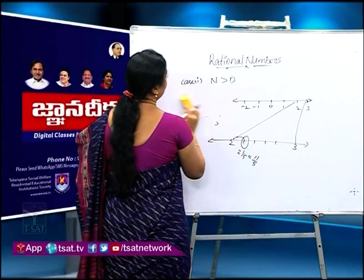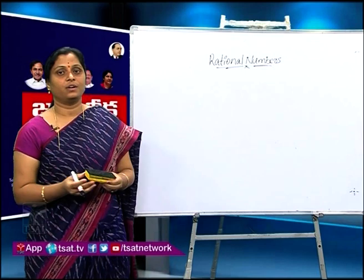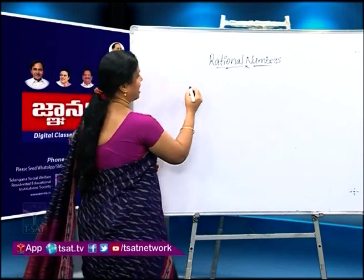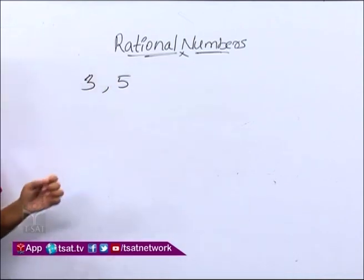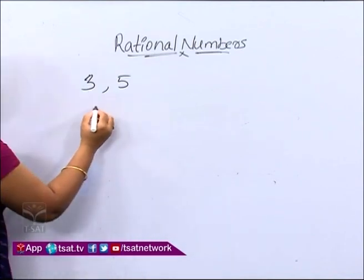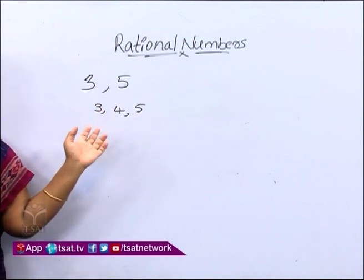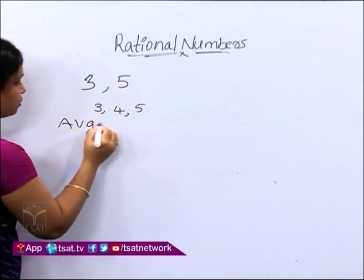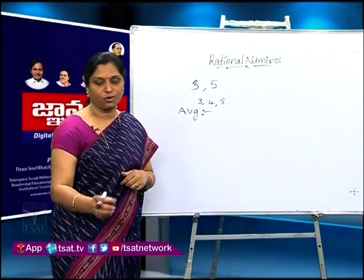Understood? Okay. Now we move forward to inserting rational numbers between two given rational numbers. How to insert rational numbers between two given rational numbers? For example, I am asking to insert rational numbers between 3 and 5. You can simply say there is 4, isn't it? But is there only 4? No, there are more than one number. Other than 4, there are more numbers between 3 and 5.